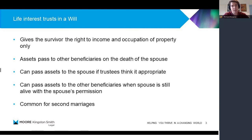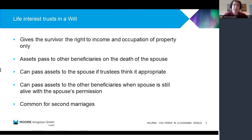The terms of the trust can also be so flexible that you can actually give some capital assets to the surviving spouse, if the testator wanted that to be a possibility. So there's a lot of flexibility built in there. But really the primary function is to protect assets on behalf of other beneficiaries, whilst giving one beneficiary the right to stay in property and to income. So that's a very brief overview of two different types of trust and how they can be used to protect assets.